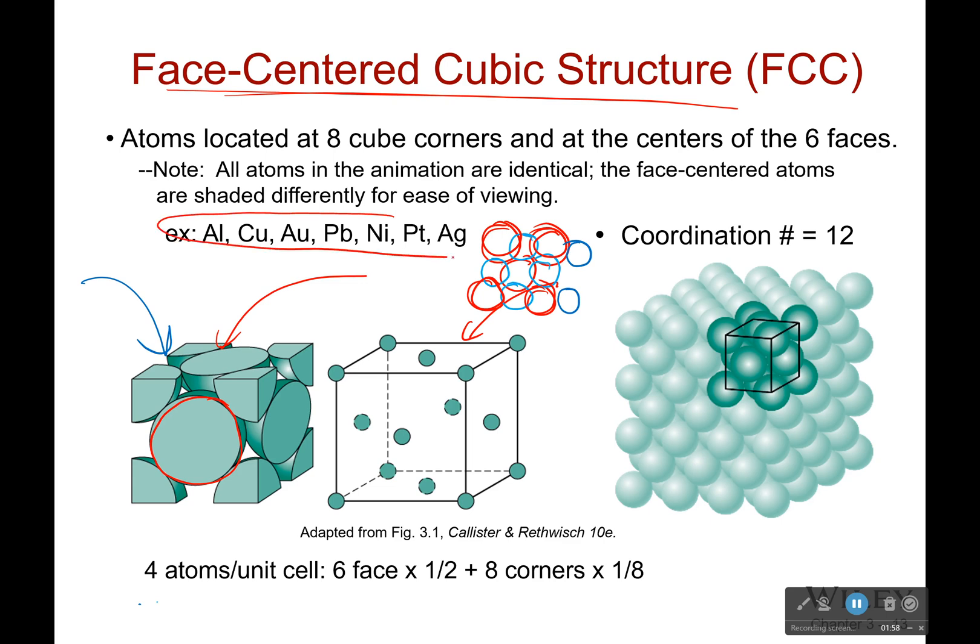Now, this is in a lot of different materials. Gold, platinum, nickel, lead, aluminum, copper. Wait, sorry, I got silver mixed up. This is silver. This is gold. It has a coordination number of 12.